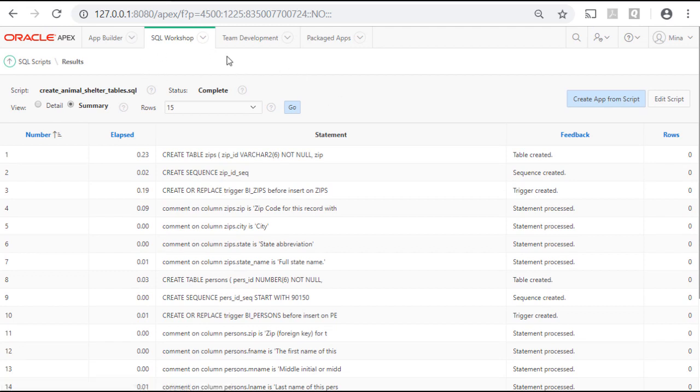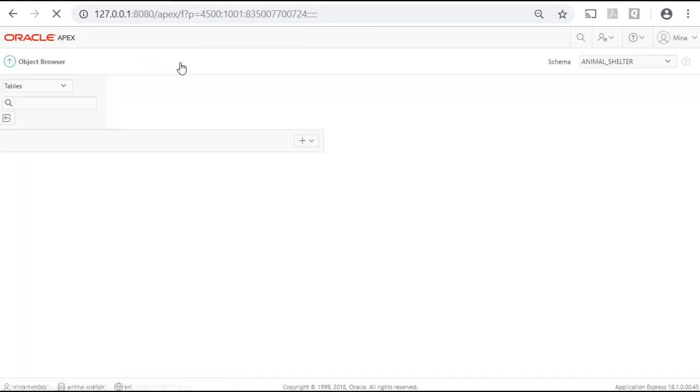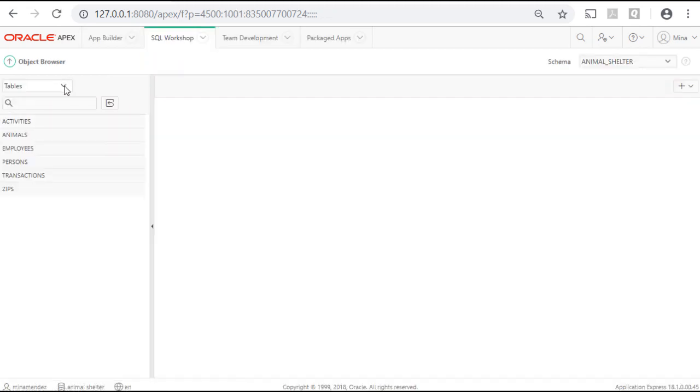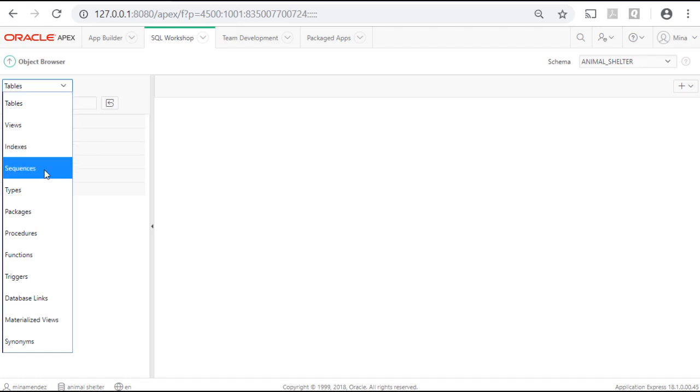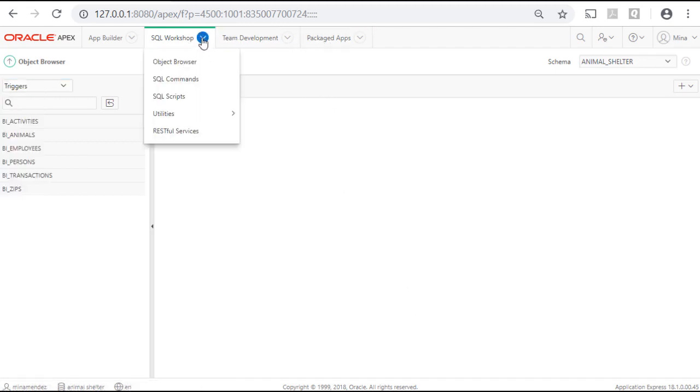So we've run a script that has actually created several things. How do we know? Because we can go to SQL Workshop and go to Object Browser. And now when we look at Object Browser under tables we see the list of tables which you saw in an earlier diagram. If I go to sequences I see sequences there. If I go to triggers I see triggers there. So running that one script has given us all these objects that actually exist at the database level.